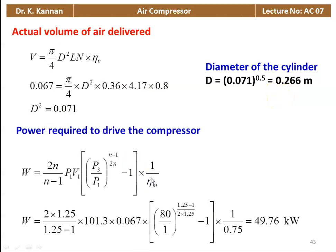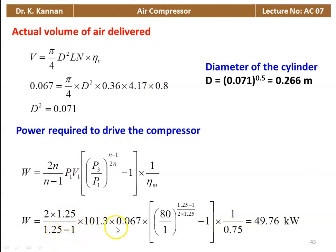Then, power required to drive the compressor. For a two-stage compressor: W = [2n/(n−1)] × P1V1 × [(P3/P1)^((n−1)/2n) − 1] × (1/mechanical efficiency) = 1/0.75 = 49.76 kilowatts.